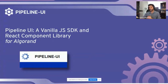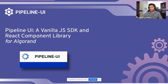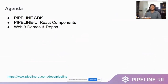As we go through these slides, we're going to demonstrate both on the back end and the front end — we're going to be looking at fully functioning decentralized applications, the SDK that powers them, and what we can do with smart contract construction as well. On the agenda for today, we have the Pipeline SDK, then the Pipeline UI React components and component library, and then we're going to run through some of the different Web3 demos and repos that we have available for developers working on Algorand.